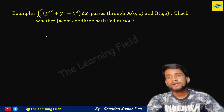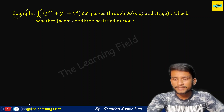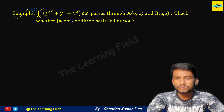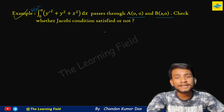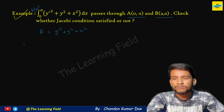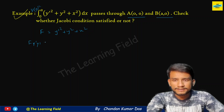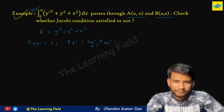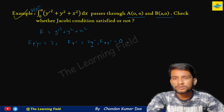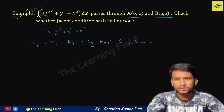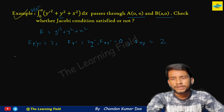Let's look at an example to check whether Jacobi's condition is satisfied. Suppose the extremal is V[y] = integral from 0 to a of (y'² + y² + x²) dx, passing through A(0,0) and B(a,0). Check whether Jacobi's condition is satisfied. Here F equals y'² + y² + x². The derivative terms are: F_y'y' = 2, F_yy' = 0, and F_yy = 2.